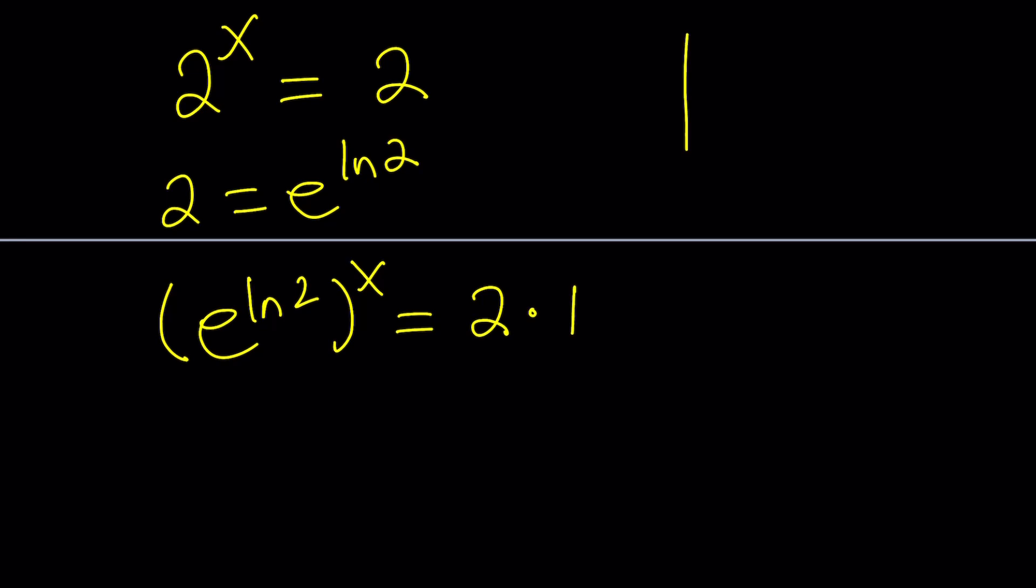Now, think about 1 as a complex number. Obviously, you can represent it in infinitely many forms. But basically, the main idea is its distance from 0 is 1 unit. So its modulus is 1, and the theta, the angle that it makes, is 0 or 2 pi or any multiple of 2 pi.